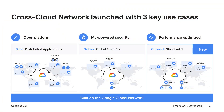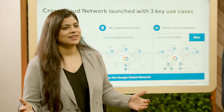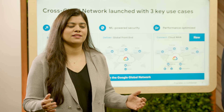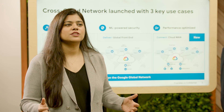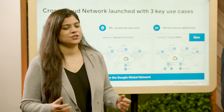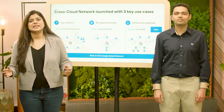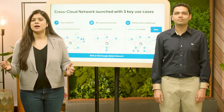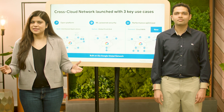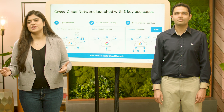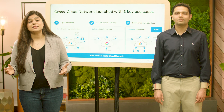Built on Google's planet-scale network, cross-cloud network consolidates bespoke networks that enterprises have for building multi-cloud distributed applications, delivering these applications over the internet to end customers. What's new and the focus here is Cloud WAN, which connects employees to public and private applications.